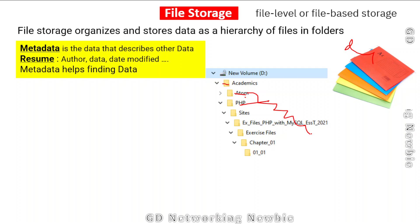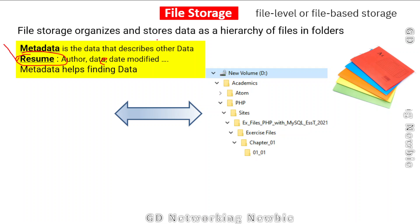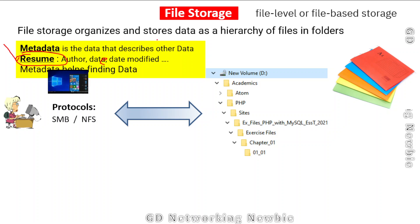Every file and folder has some metadata associated with it, and this metadata actually helps with finding the data itself. For example, if we have a resume, the metadata associated with it can be the name of the author, the date it was created, or the date it was modified. If a user wants to access data stored in file storage, they can do so using certain protocols like SMB for Windows-based machines, or NFS for Unix or Linux-based systems.